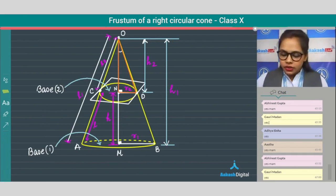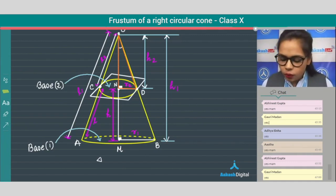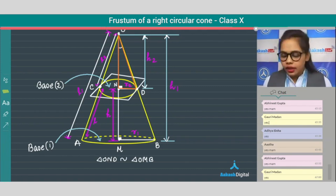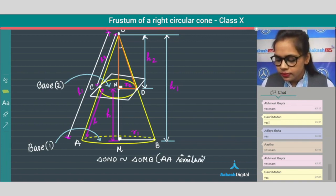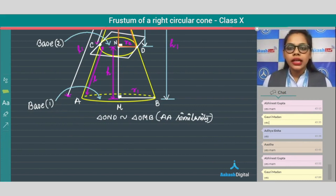So here you can check this out. This triangle OND is similar to triangle OMB by which similarity criteria? It is by angle-angle similarity.